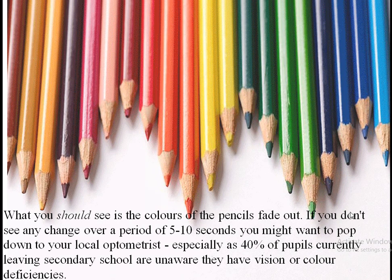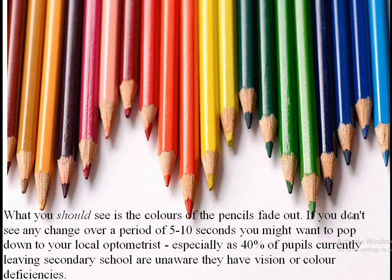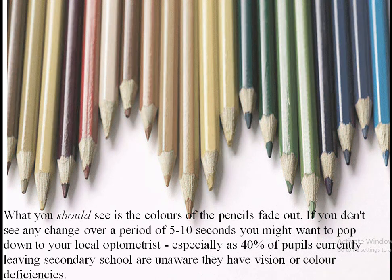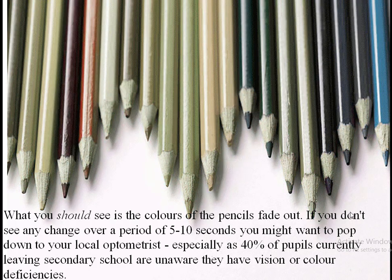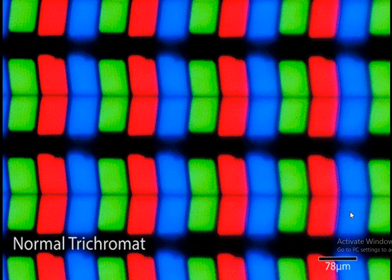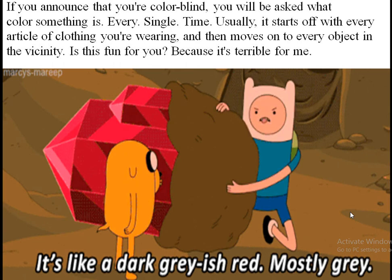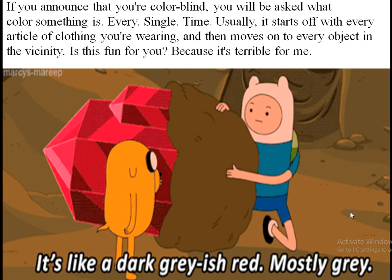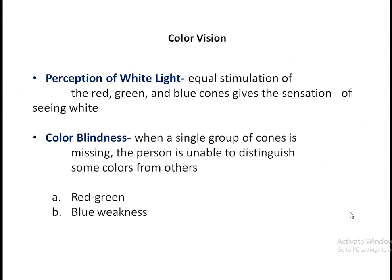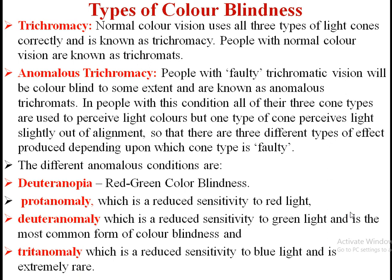Only when you check their color vision do they come to know they cannot perceive some selected colors. To check color vision you have a separate practical in the lab. The types of color blindness are as follows. The first is normal color vision, called trichromacy. Abnormalities include red-green color blindness — in some, red light is not perceived; in some, green light perception is absent.